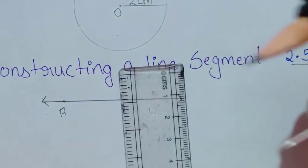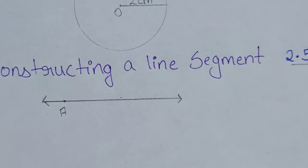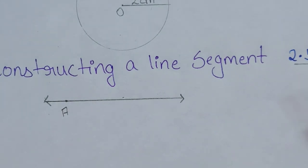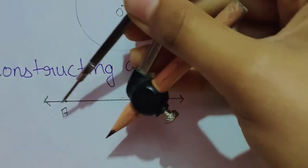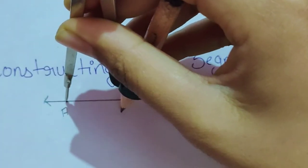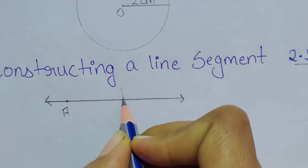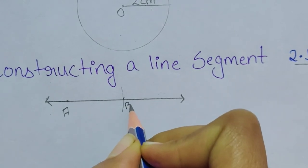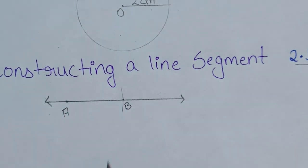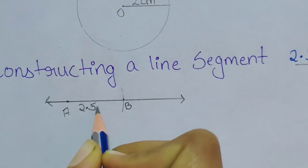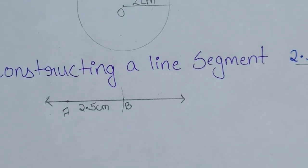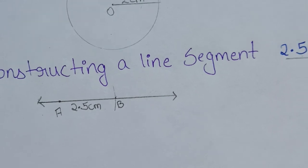Open the compass to 2.5 centimeters and keep the pointer on point A, then cut an arc on the given line. The point where the arc meets the line is named point B. The length of AB will be 2.5 centimeters. This is how to construct a line segment using a compass.